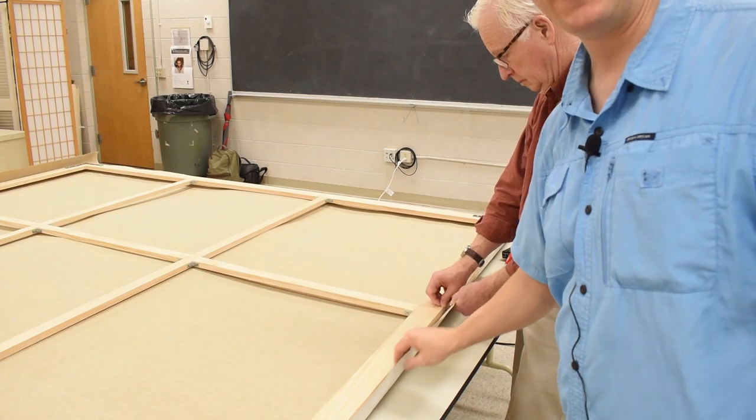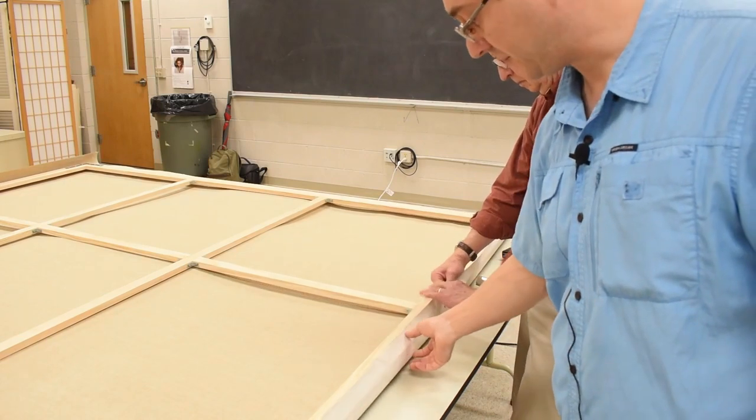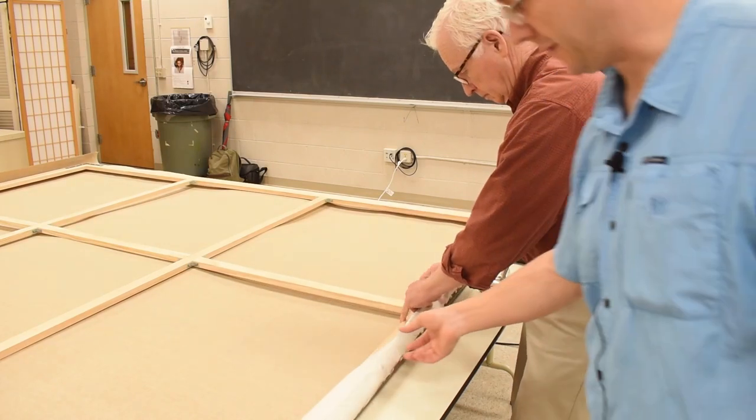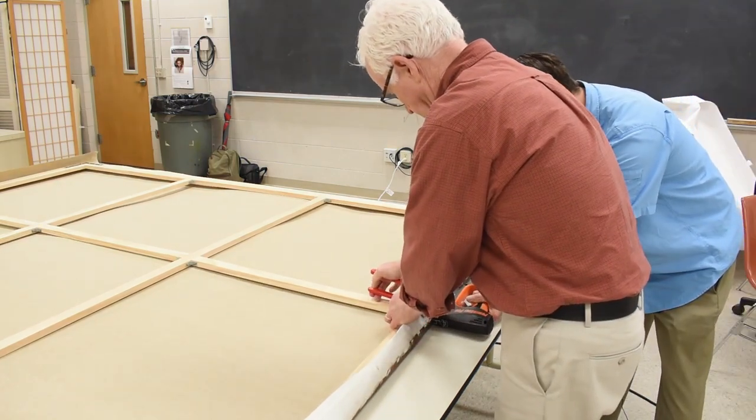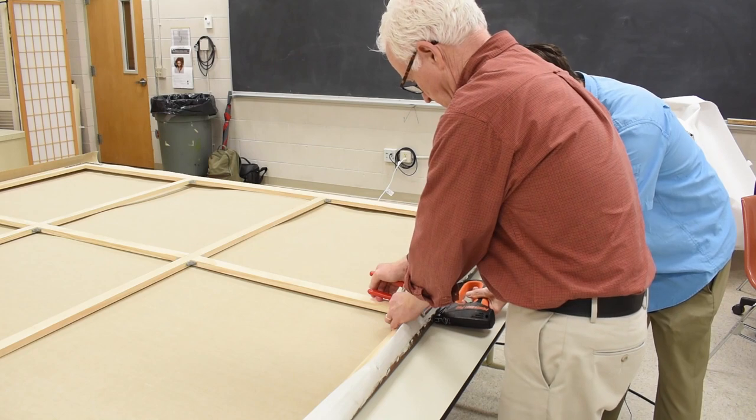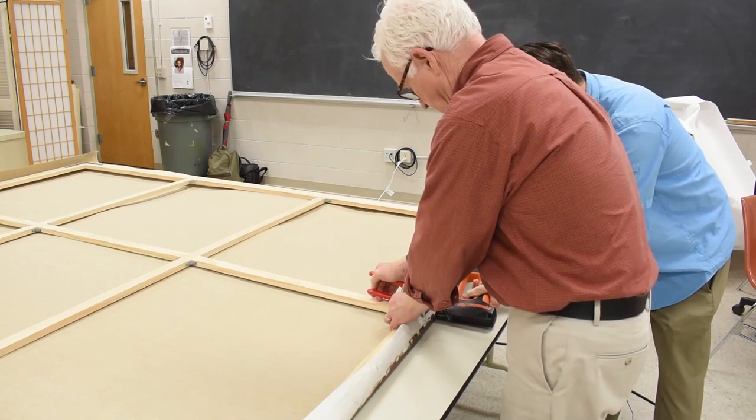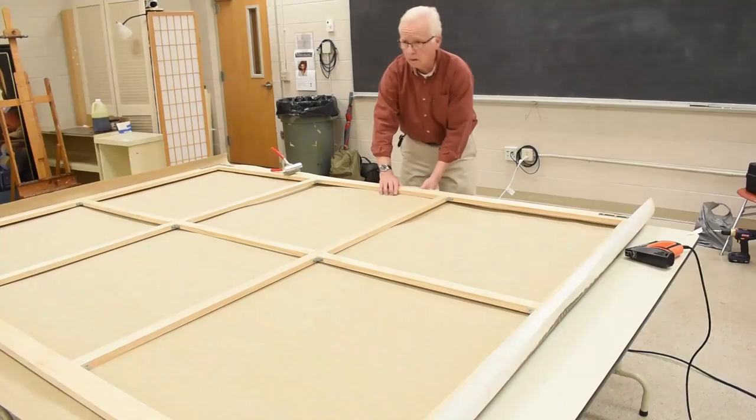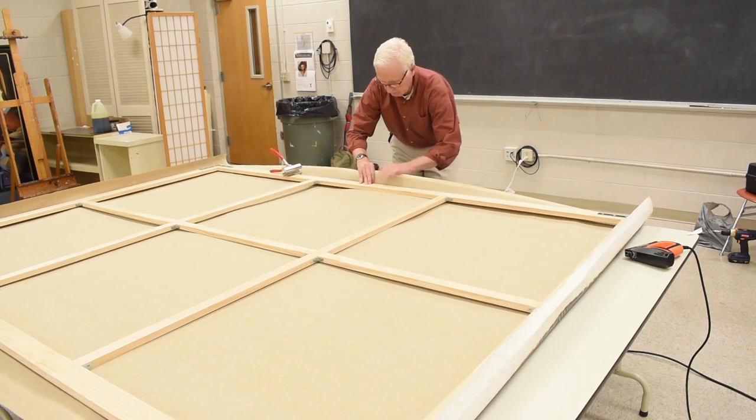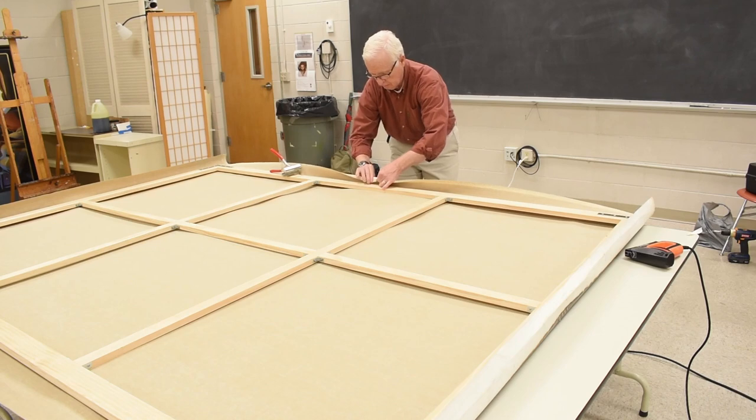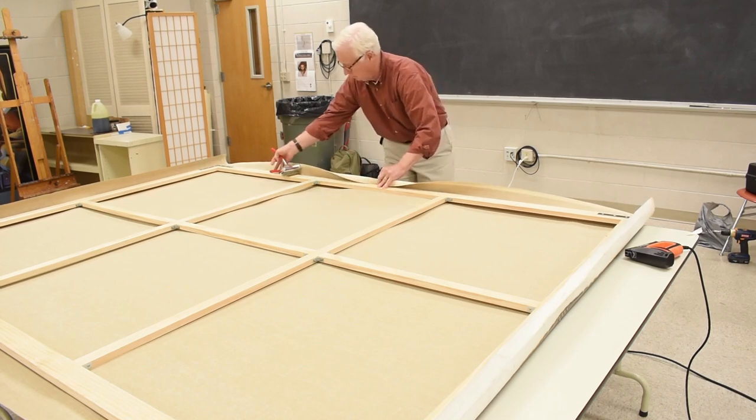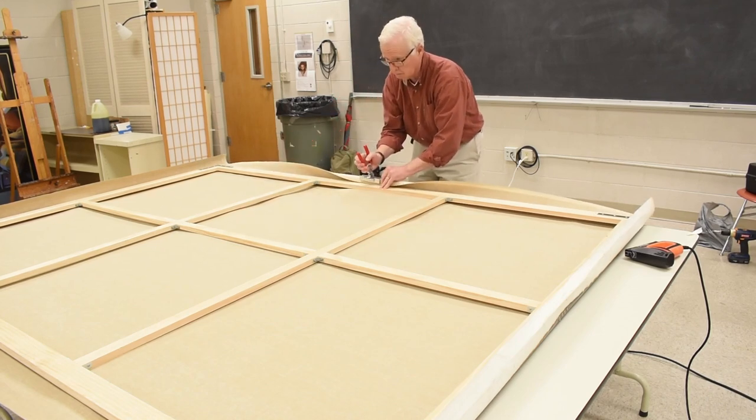So here with that excess selvedge we kind of have to fold it over to get a good grip with the pliers. Next we're moving to the center of the long side and we're going to put a few staples in the center there and then re-stretch it on the opposite long side in the center so we're kind of creating this diamond of tension.